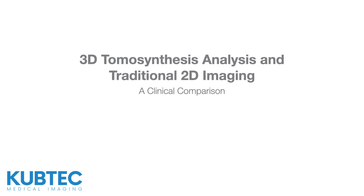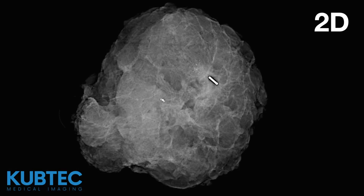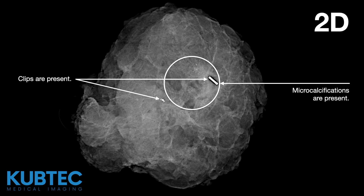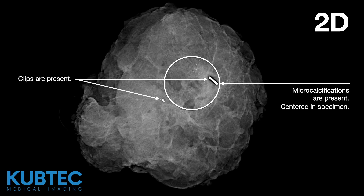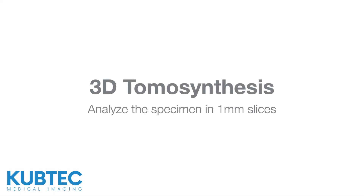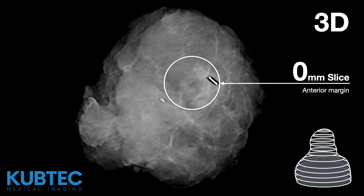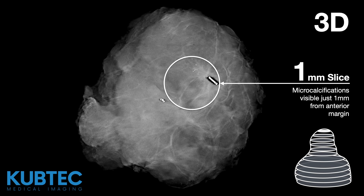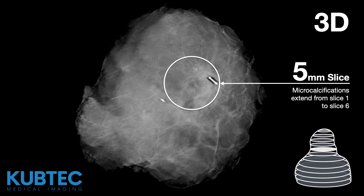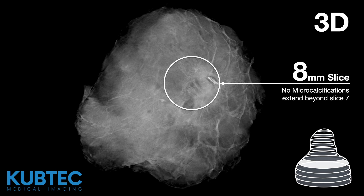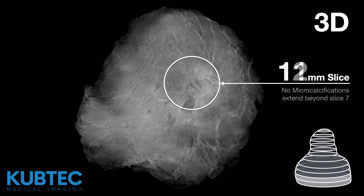The following images compare 3D tomosynthesis analysis and traditional 2D imaging using clinical specimens. Looking at the 2D image, we can see that the microcalcifications are there, but we don't know where 'there' really is in relation to the margins. Using 3D tomosynthesis, we can analyze the specimen in 1mm slices. On the 0mm slice, we are looking at the very tip of the anterior margin. On the 1mm slice, the microcalcifications come into focus just 1mm from the anterior margin. The microcalcifications extend from slice 1 to slice 6, no microcalcifications extend beyond slice 7, and the posterior margin is uninvolved.